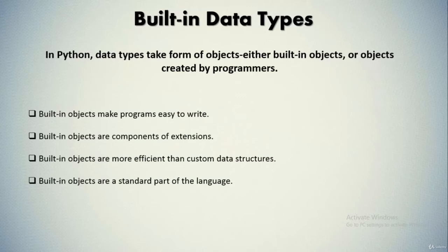We have built-in data types in Python. Firstly, built-in objects make programs easy to write. For simple tasks, built-in types are often all you need to represent the structure of program domains, because you get powerful tools such as collections using lists and search tables using dictionaries for free — you can use them immediately.